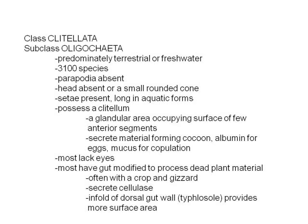Where the polychaetes are primarily a marine group, the oligochaetes are more common in freshwater or terrestrial habitats. This includes the common earthworm that you dissected last week. It is a considerably smaller group than the polychaetes. A key characteristic is the absence of parapodia. The head is typically not as highly developed as in the polychaetes — especially in the errant polychaetes — and in oligochaetes the head is typically either absent or just a rounded cone like the prostomium seen in dissection. They do have chaetae, though they are fairly indistinct in terrestrial forms and longer in the aquatic forms.